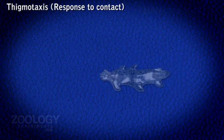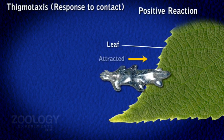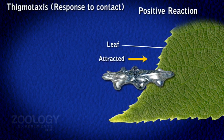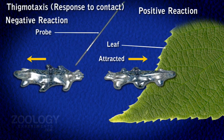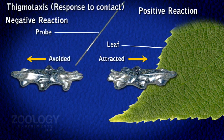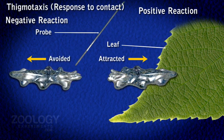Thigmotaxis: A floating Amoeba responds positively to those objects upon which it glides. It will back away from contact with a foreign object while crawling or resting.